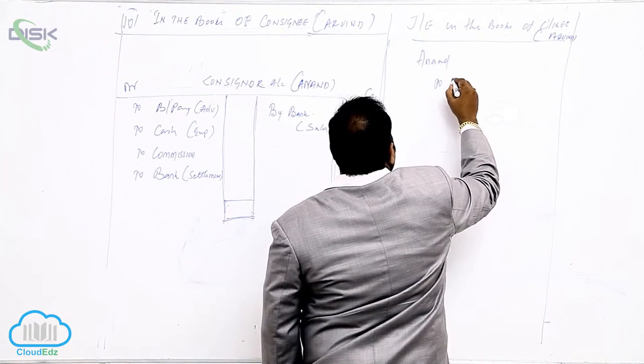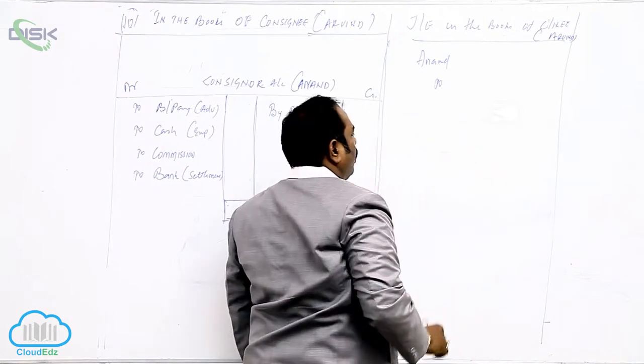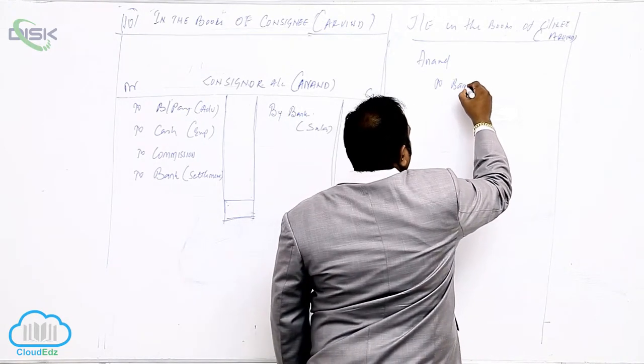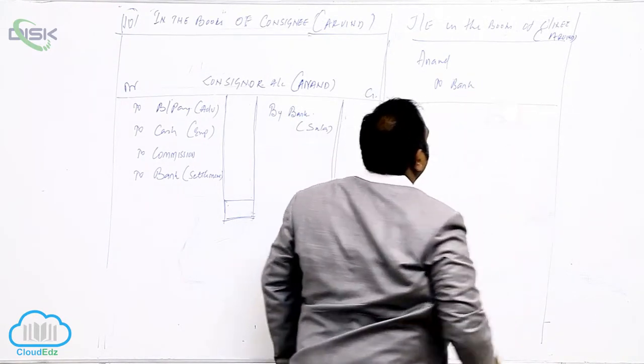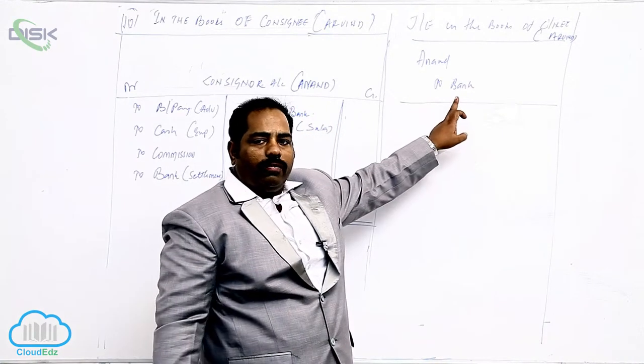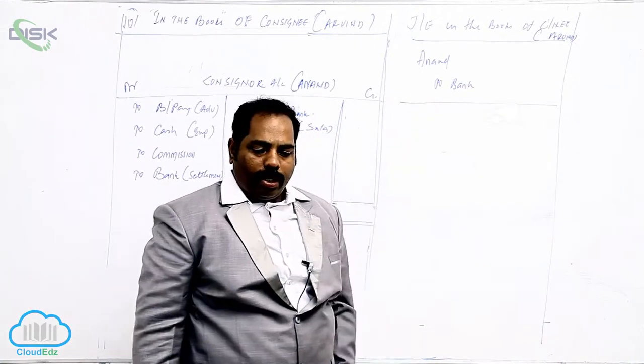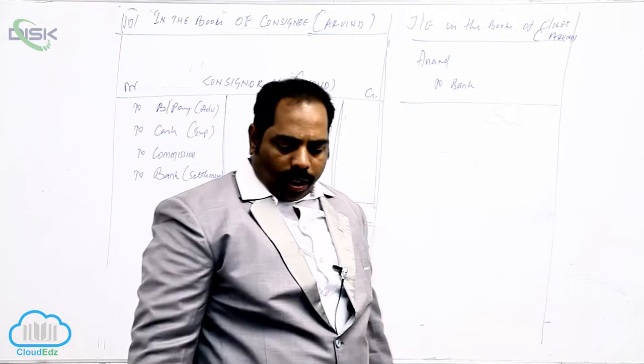Consignor account debit. We are giving an advance. So we will write what? To bank. How much is the advance? Debit the receiver. We are giving a check. So write to bank. Credit what goes out or credit the giver.